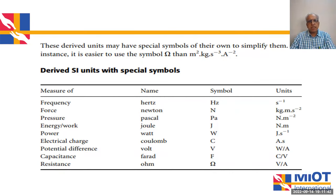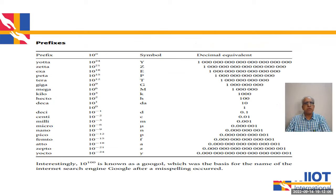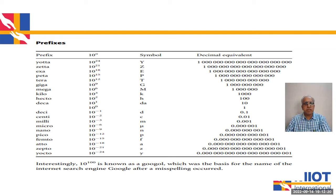There are special SI units with special symbols. For frequency it is hertz, for force it is newton, for pressure it is pascal, for energy and work it is joules, for power it is watts, for electrical charge it is coulomb, for potential difference it is volt, for capacitance it is farad, and for resistance it is ohm. The prefix table ranges from 10 to the power of 0 to 10 to the power of 24 and 10 to the power of minus 24, labeled deca, hecto, kilo, etc. Interestingly, 10 to the power of 100 is known as googol, which was the basis for the name of the internet search engine Google — actually a misspelling — but it is really a helpful tool for us.